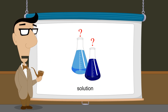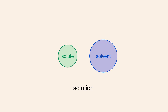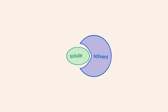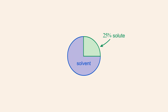But what exactly is a solution? And what does it mean to say that a solution has a particular concentration? A solution is a mixture of one substance called the solute dissolved in another substance called the solvent. The strength or concentration of a solution is often specified as the percentage volume of the solution which is made up of solute. This is called the volume percent concentration.